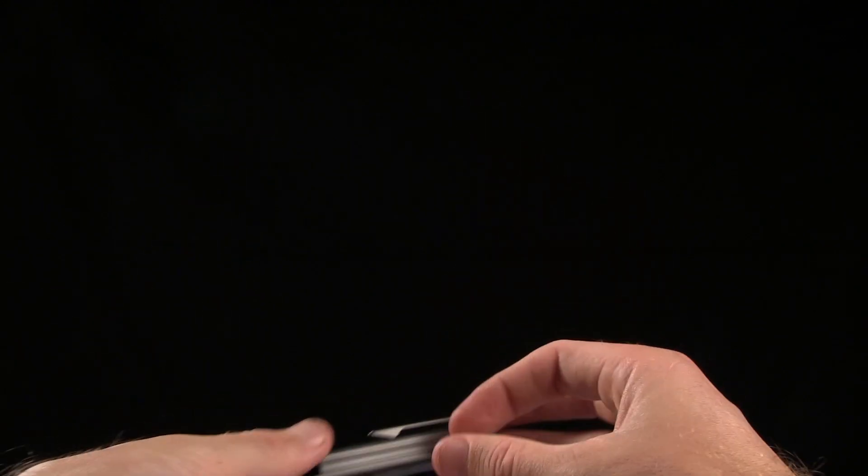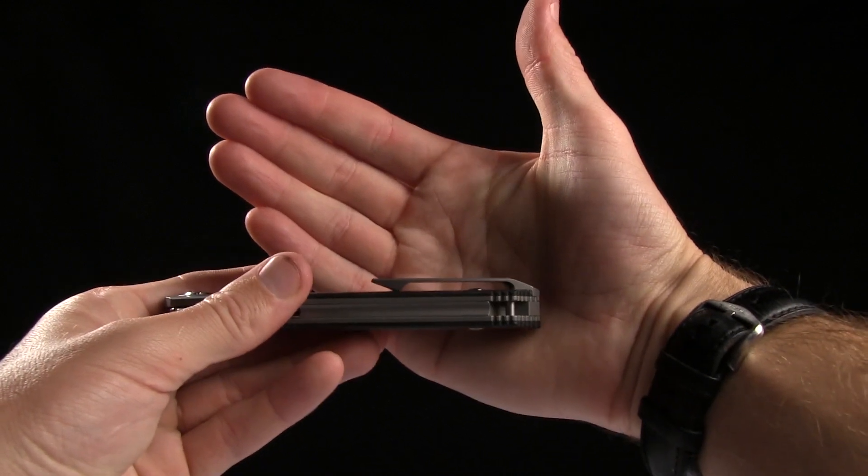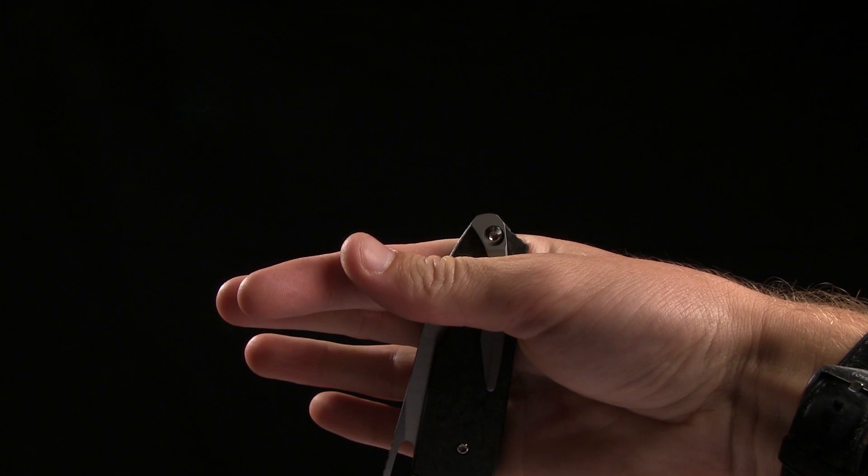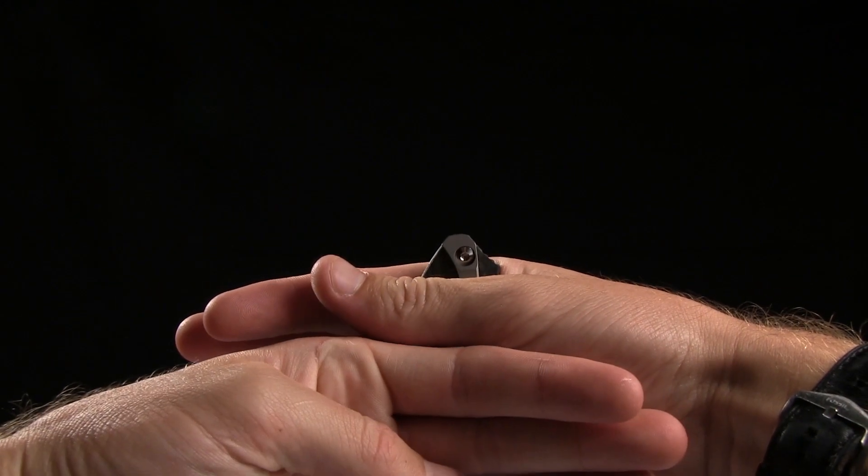Now you do have a pocket clip for tip-up right-handed carry, and there's the profile view of it, so it's going to come up to about there in your pocket. And that's all that you're going to see.